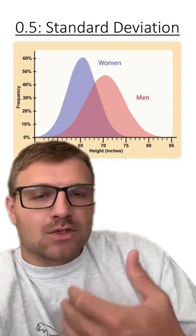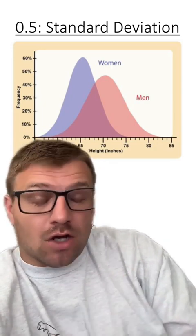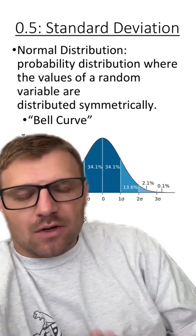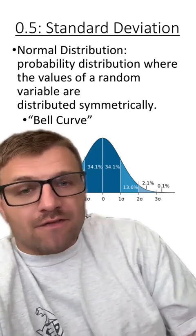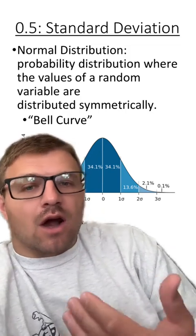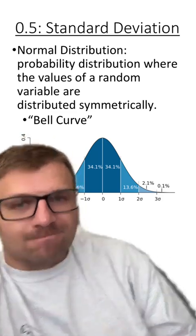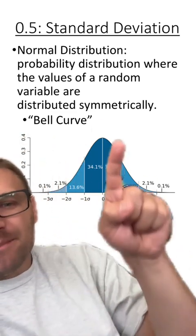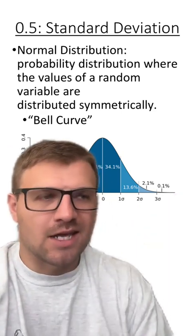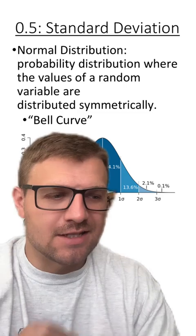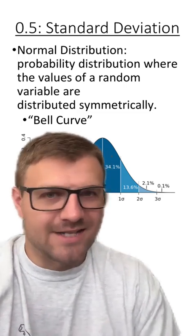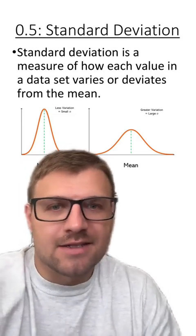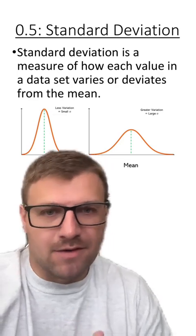That's important because we're going to look at something called the Bell curve, or something called standard deviation. This specifically deals with something called normal distribution — this is the probability distribution where the values of a random variable are distributed symmetrically, otherwise known as the Bell curve. These graphs typically look like a bell. What we're looking at here is how do data sample sets vary within their data, and that's specifically what standard deviation measures — it's the measure of how the data set varies or deviates from the mean.